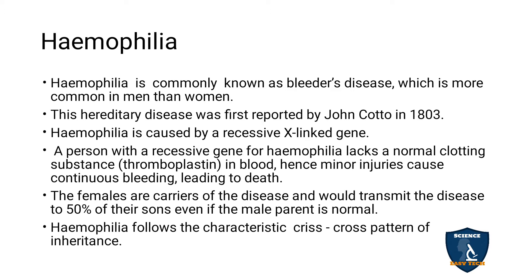Hemophilia is a hereditary disease, first described by John Otto in 1803. It is caused by a recessive X-linked gene. In a hemophilia person, the recessive gene affects the production of thromboplastin, which is needed for blood clotting. A minor injury can therefore lead to excessive bleeding. About 50% of sons from a carrier mother can be affected.